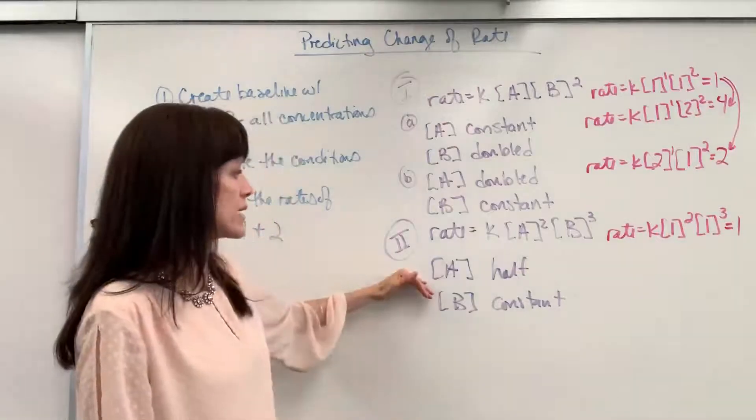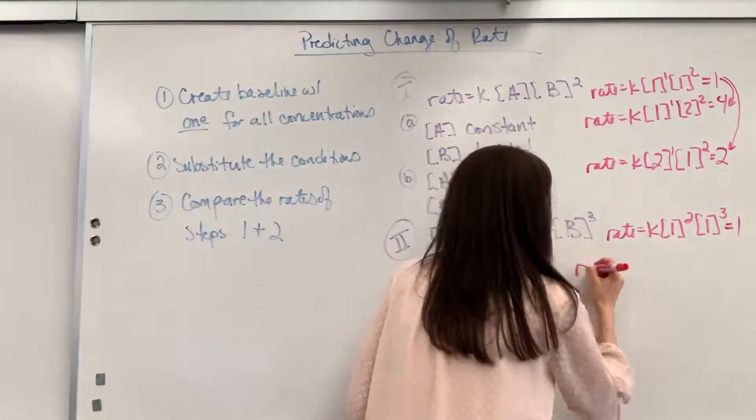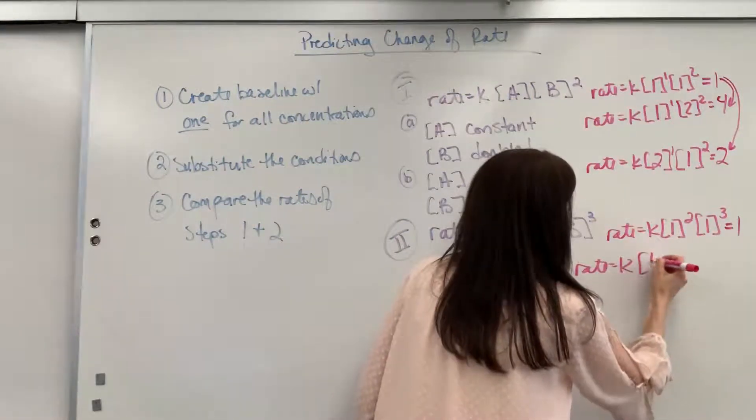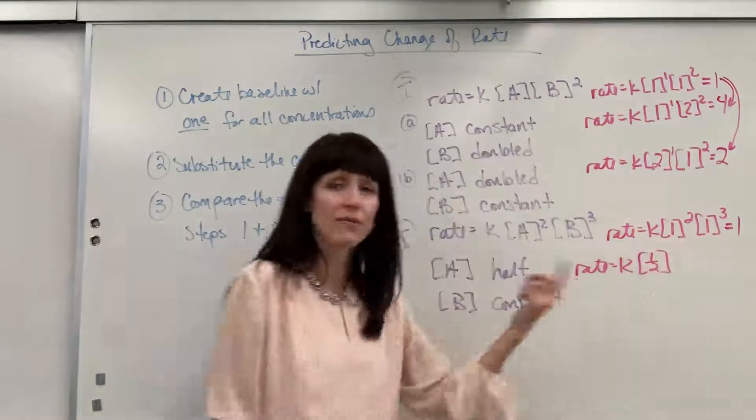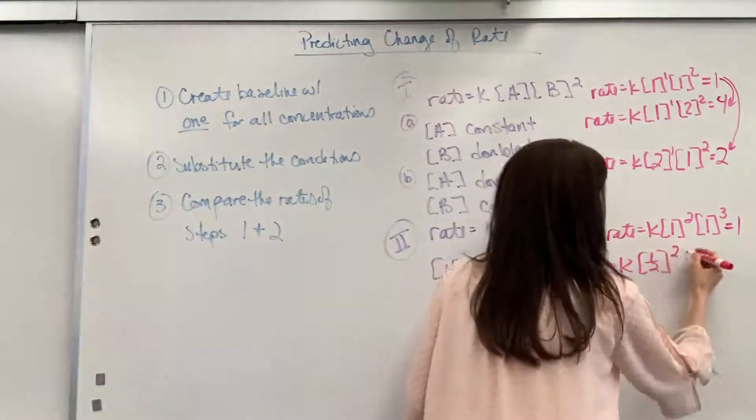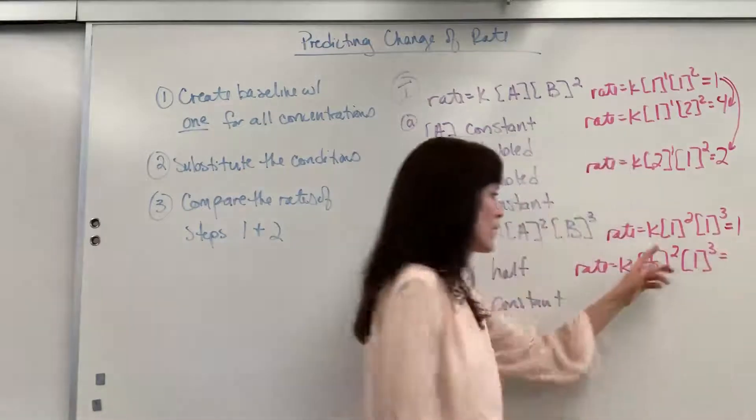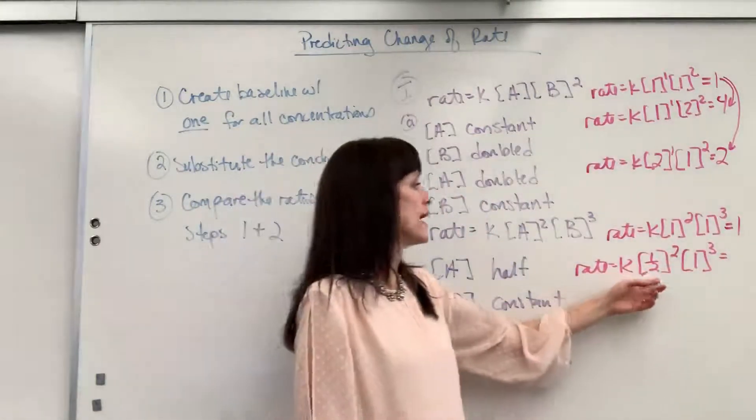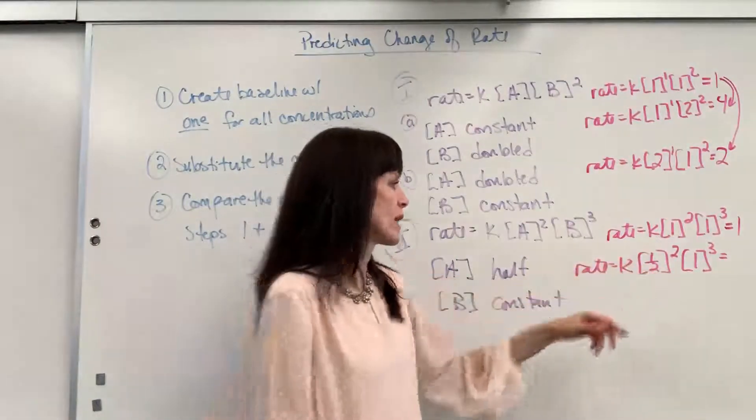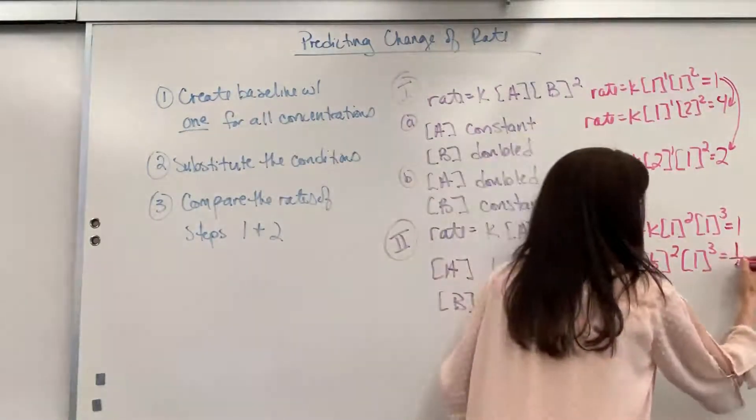Okay, let's go ahead and substitute these new conditions. We will have rate equals K times 1 half. So half of 1, if I'm halving the concentration, is half. Squared times 1 cubed. Okay, 1 cubed is 1. 1 half squared. 1 half times 1 half is 1 fourth. So 1 fourth times 1 is 1 fourth.